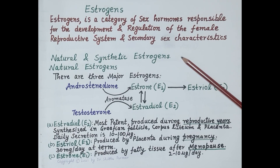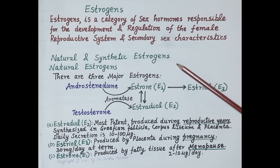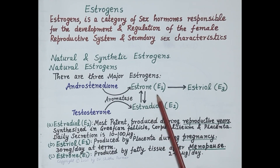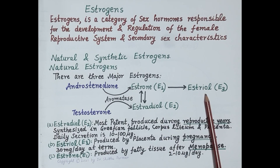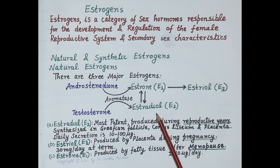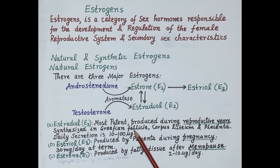Estrogens can be natural or synthetic. Now let's first talk about natural estrogens. There are three major natural estrogens produced in the body: estrone, designated as E1; estradiol, designated as E2; and estriol, designated as E3. Estradiol is the major estrogen and it is synthesized by the ovaries.